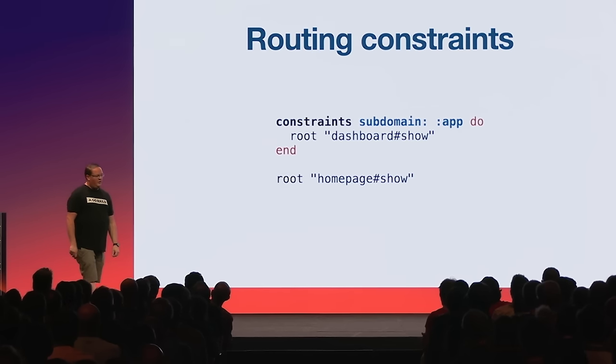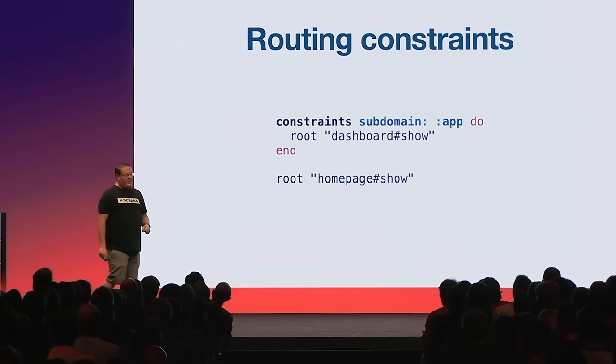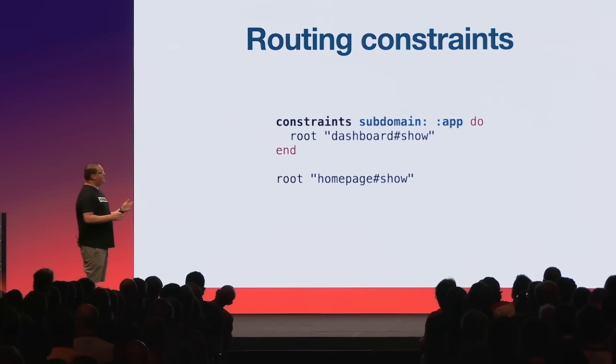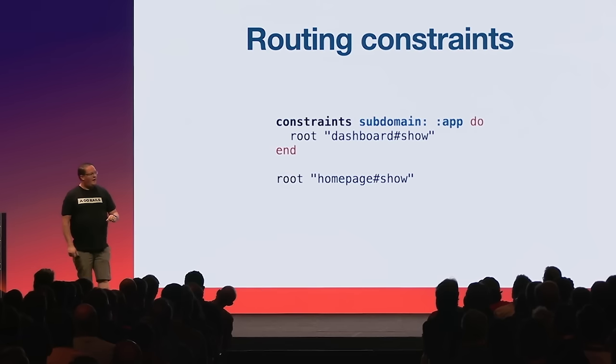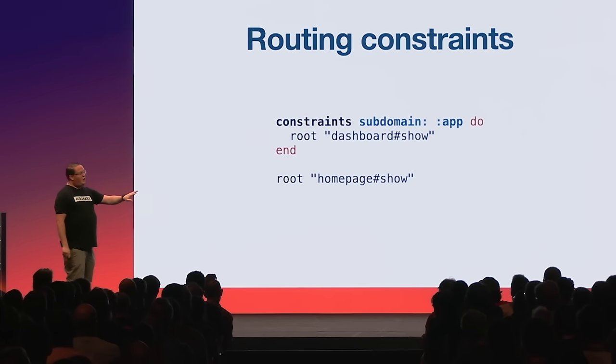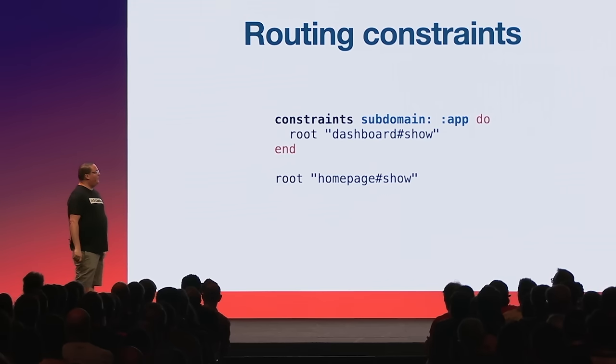Another thing that doesn't get used enough is routing constraints. If you're building an application where you want to separate your marketing site from your app, you can do something simple: if we're on `app.example.com`, render the dashboard as the root; if we're on `www` or no subdomain, render the marketing homepage. You can use this temporarily while planning to eventually move marketing to WordPress while the Rails app lives under the `app` subdomain.